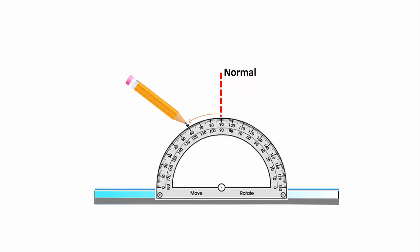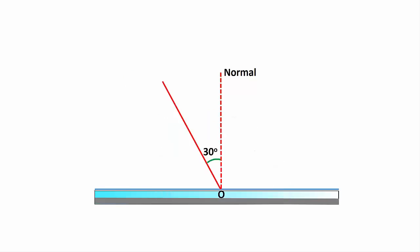Draw an incident ray with angle of incidence 30 degrees. The angle between incident ray and the normal line is called angle of incidence.